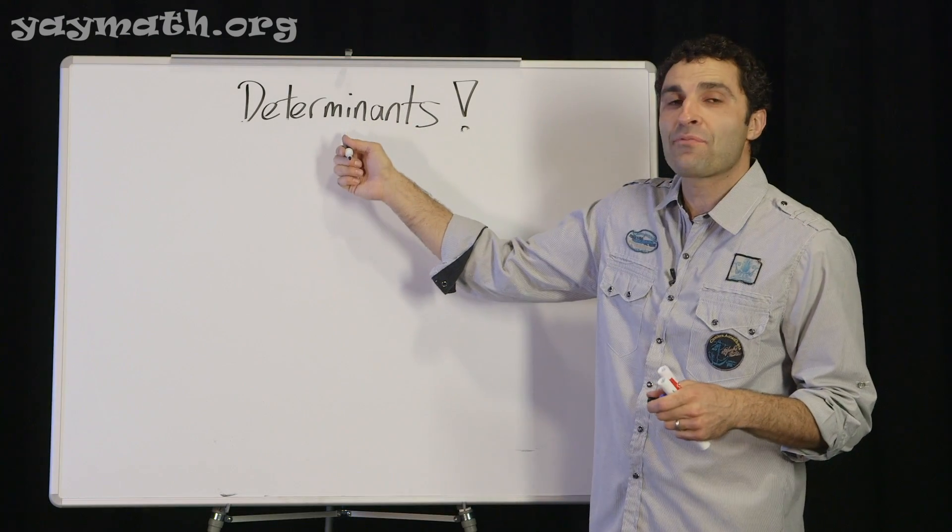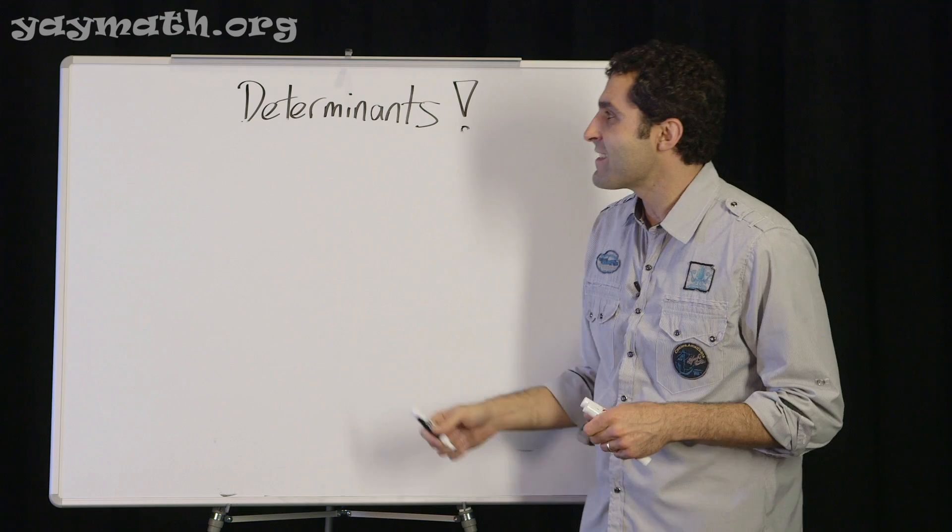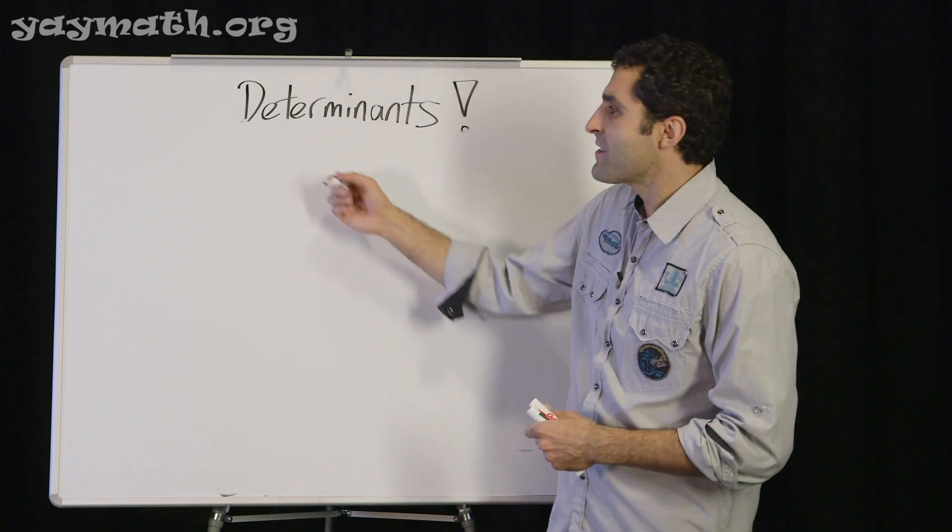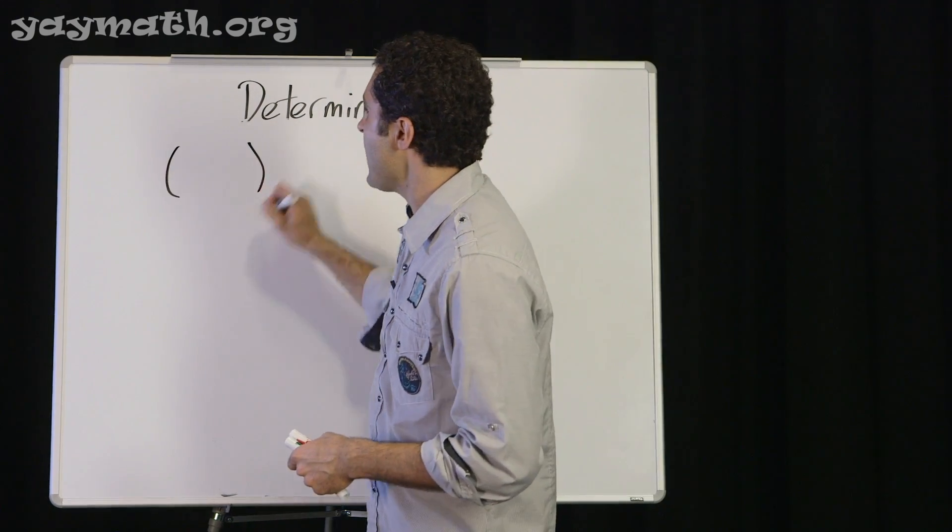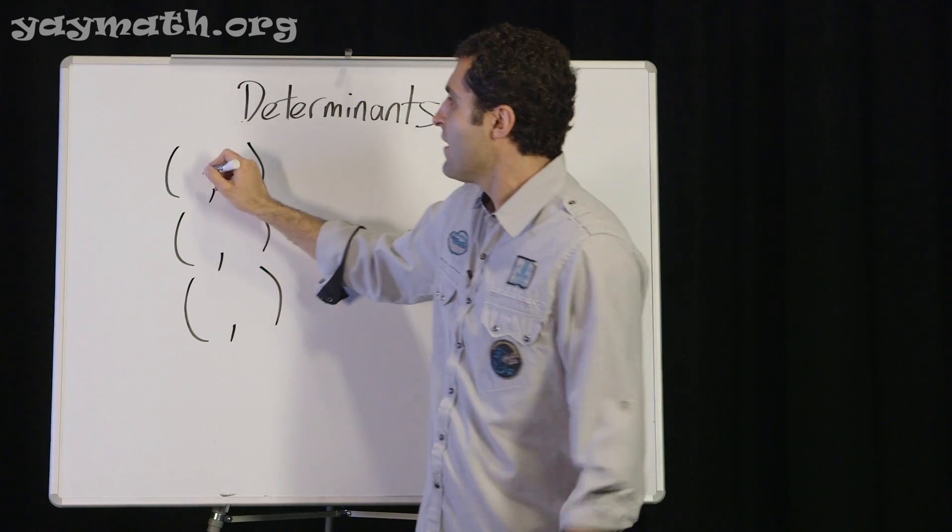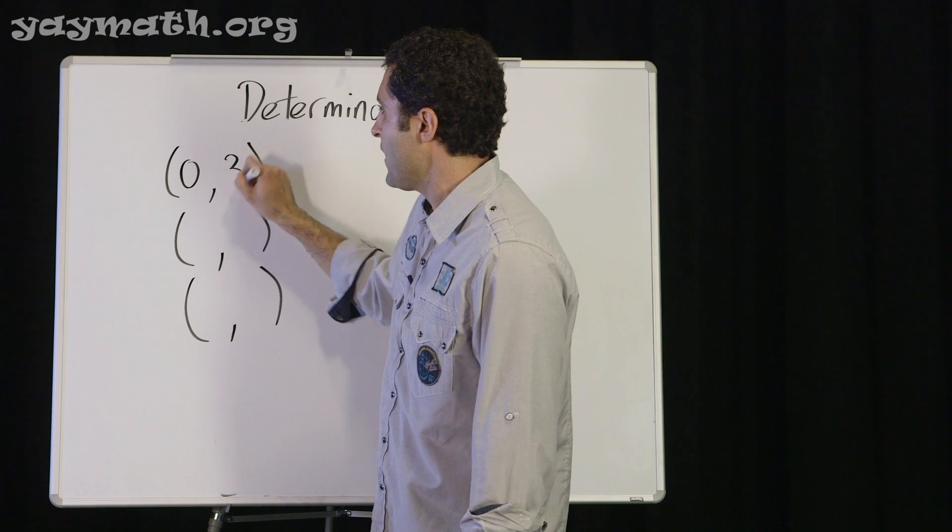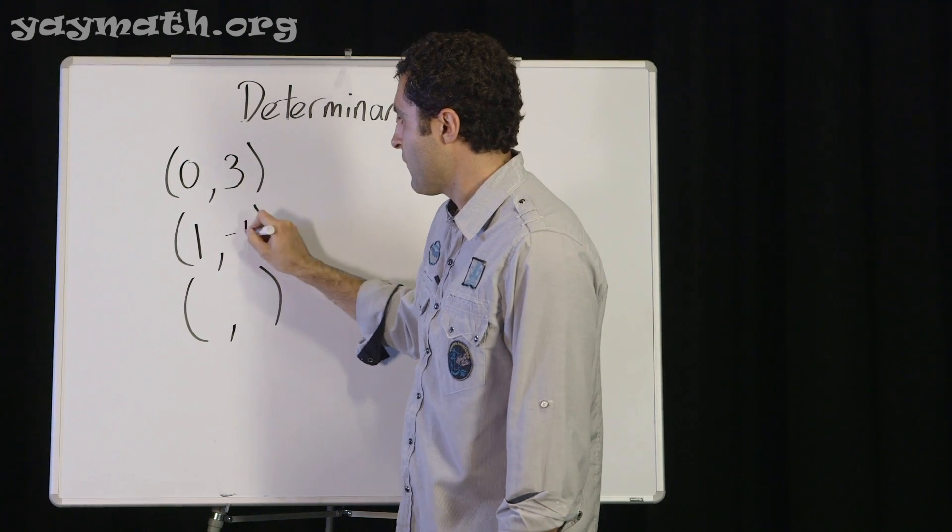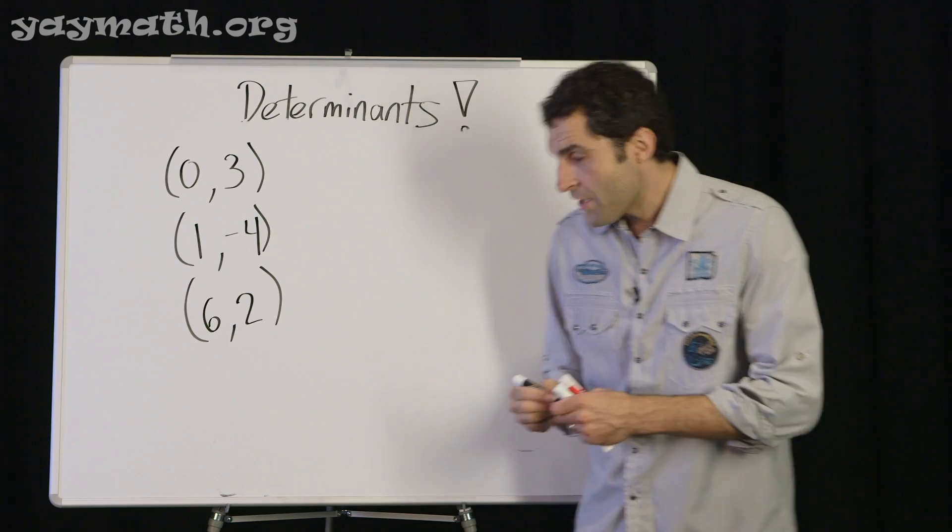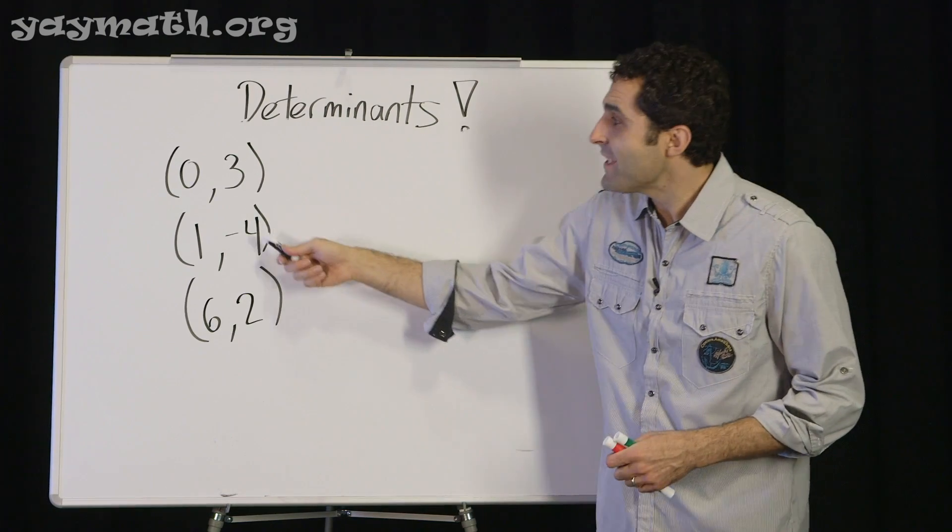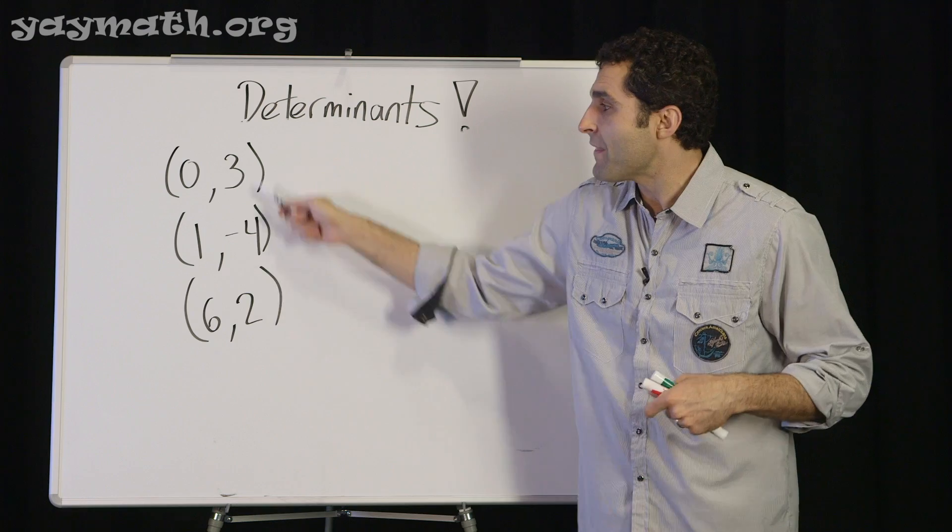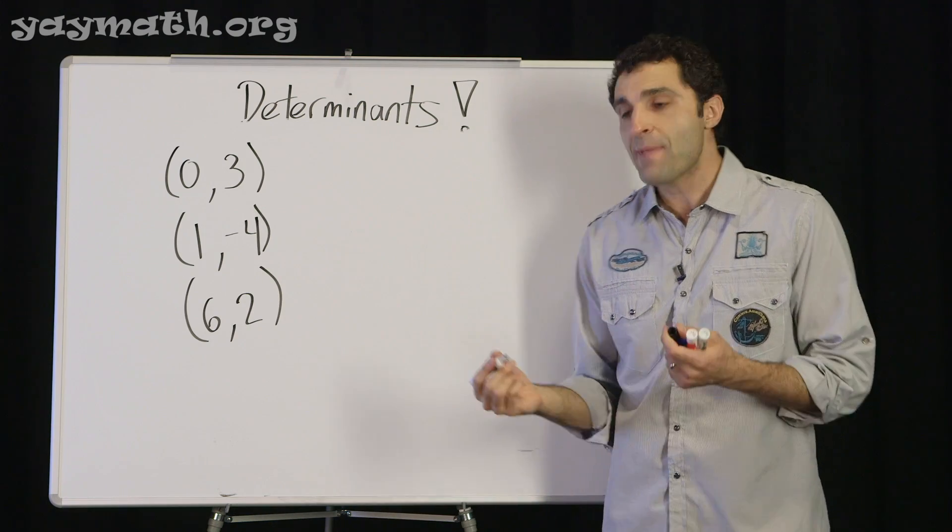What's interesting about a three by three determinant is that it actually can give you the area of a triangle. Check this out. It's amazing. Come up with three random points. Any three random points. Just like we've been graphing in the past. Let's say (0,3), (1,4), and (6,2). Using determinants, you can get the area of the triangle formed by these three points. I just made it up randomly.